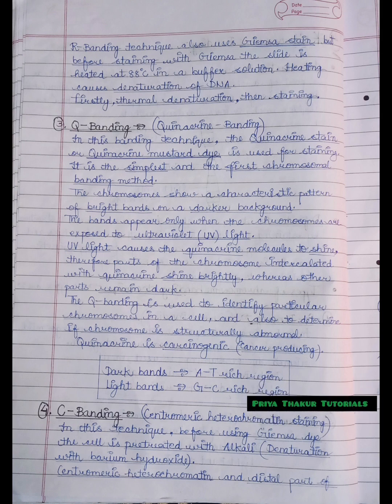UV light causes the quinacrine molecule to shine. Therefore, parts of the chromosome intercalated with quinacrine shine brightly whereas other parts remain dark. Q banding is used to identify particular chromosomes in a cell and also to determine if chromosome is structurally abnormal. Quinacrine is carcinogenic. In Q banding, the dark bands represent AT rich region and the light bands represent GC rich region.